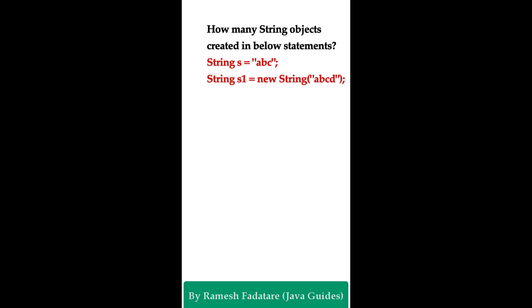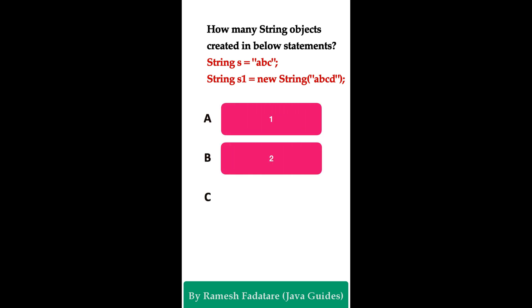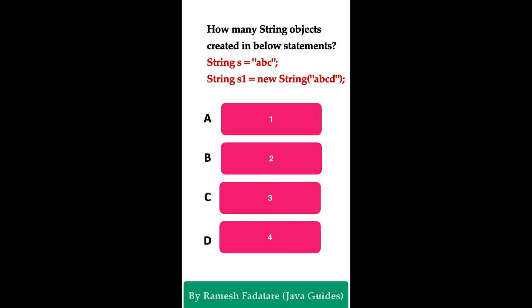Welcome to Java Quiz Series. How many String objects are created in the following statements: String s = "abc"; String s = new String("abcd")? Option A: one object, Option B: two objects, Option C: three objects, Option D: four objects. You have five seconds to answer. The correct answer is Option C: three objects.